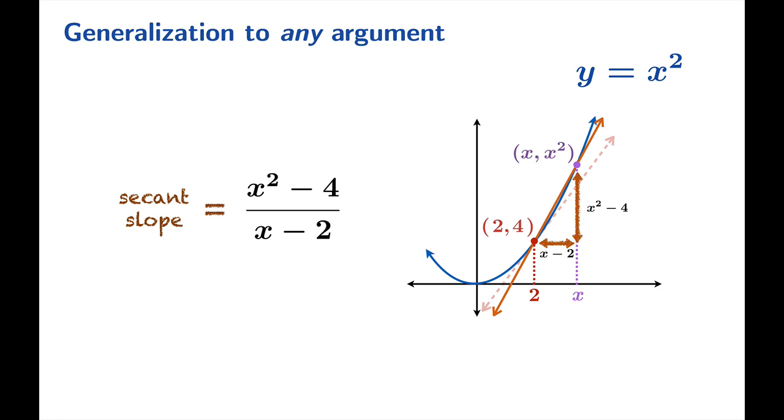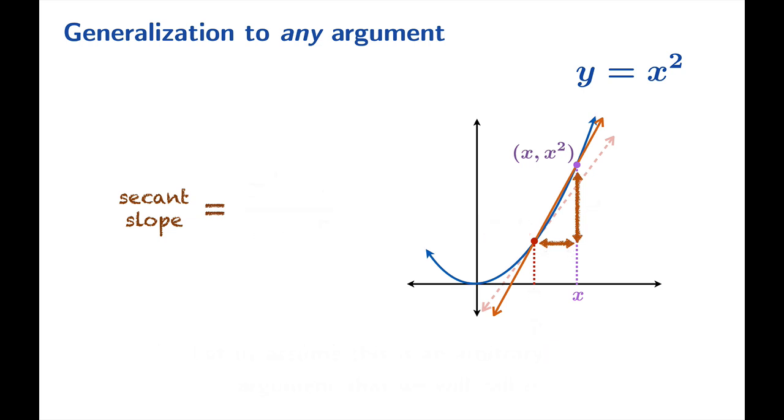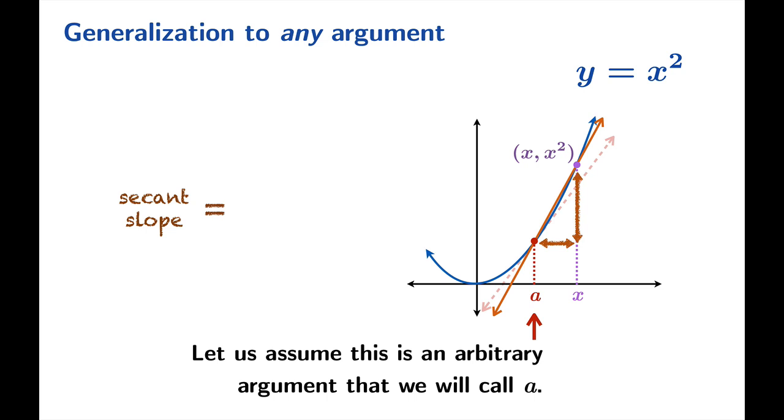Nothing about this calculation really depends on the fact that we're looking at the argument 2. In other words, we could have just as well called this argument a instead of 2. And really nothing changes.